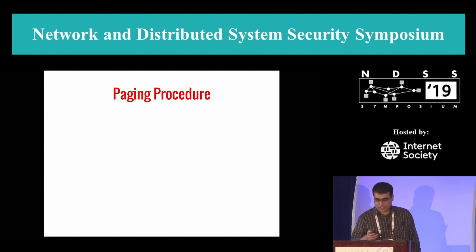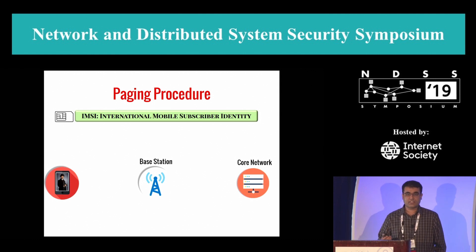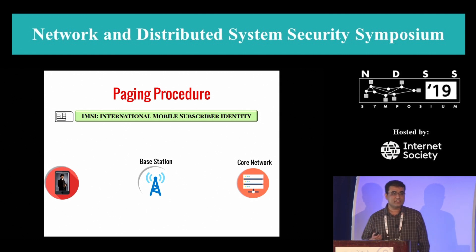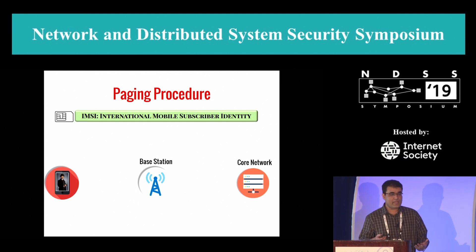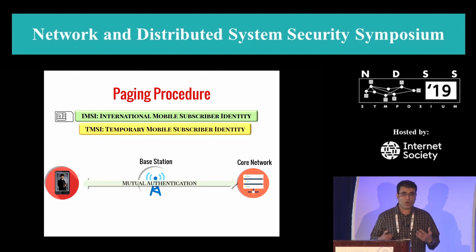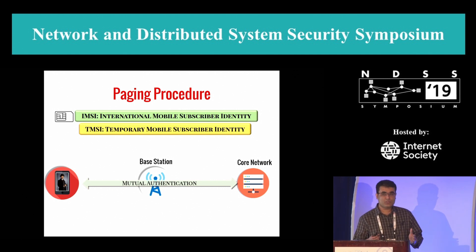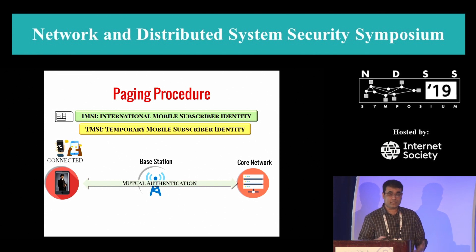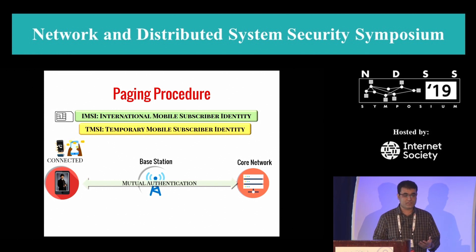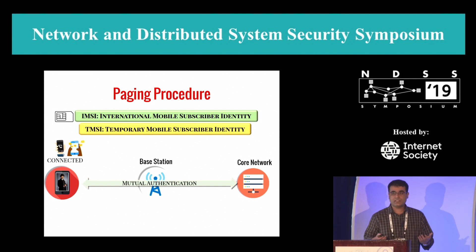In cellular networks, a device is equipped with a SIM card which gives a unique identity to the user, which we call IMSI, or International Mobile Subscriber Identity. Due to the sensitive nature of this identity, the cellular standard recommends using a temporary identity for all future communication, called Temporary Mobile Subscriber Identity, assigned by the core network after mutual authentication between the device and the core network. When the device has any cellular connectivity, for example phone calls or SMS, they remain connected to the network.